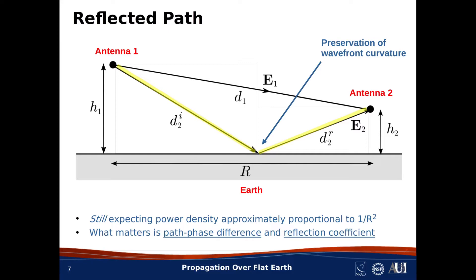There are two things that will contribute to a difference in phase. The first is the difference in path length — that is, the difference between d sub 1 and d sub 2 super i plus d sub 2 super r. This difference is significant if it is even a small fraction of a wavelength, because we have 360 degrees of phase per wavelength, so even a small difference in distance can contribute tens of degrees of phase. The second contributor to phase difference is the reflection coefficient experienced by the reflected ray, which can be either positive or negative — a phase shift of 0 or 180 degrees.